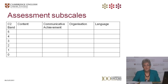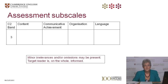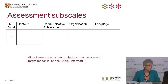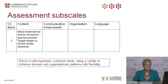Let's have a look at some of the Band 3 descriptors. The Content sub-scale is the same for all levels of the CEFR, unlike the other three sub-scales which describe a candidate's ability according to the relevant level — here, C2. Looking at the descriptors shown, one relates to Content, another to Organisation, and another to Communicative Achievement. You can find all the descriptors for C2 on the handout for this webinar as well as in the Proficiency Handbook for Teachers.